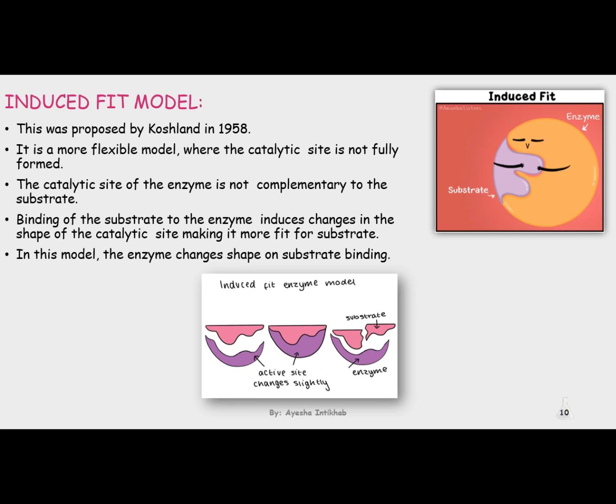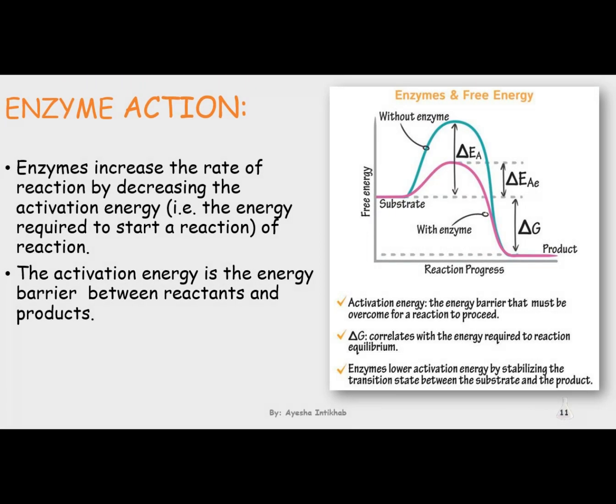Once the enzyme-substrate complex is synthesized, it might be reversible — ES can reverse to liberate the enzyme and substrate from the induced fit model. But once it is synthesized, the second mechanism is the conversion of substrate into its product. Once the induced fit model is achieved, ES is then converted in the second step into EP, which stands for enzyme-product.